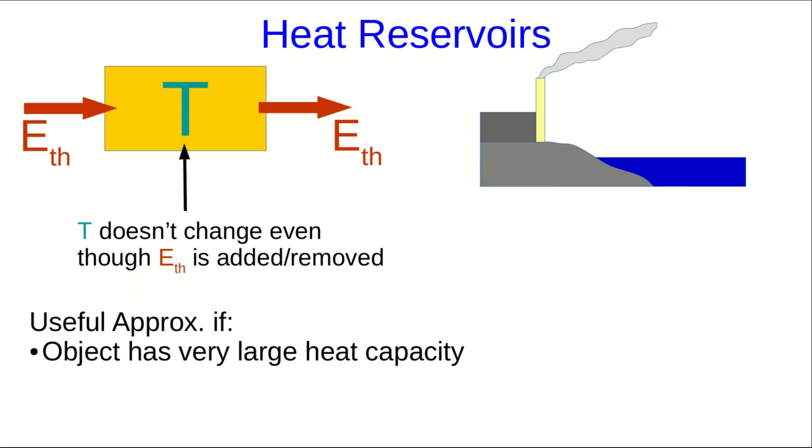So, for example, with coal and nuclear plants that are on the coast, they often dump their waste thermal energy into the ocean. And this will locally warm the ocean slightly, but overall it has virtually no effect on the temperature of the ocean. And so we could say the ocean is a heat reservoir. It really isn't, but it's a good approximation.